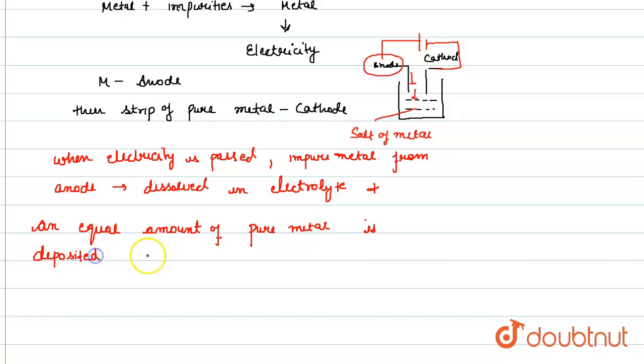So, the pure metal is obtained on the cathode, and the refining procedure is completed.